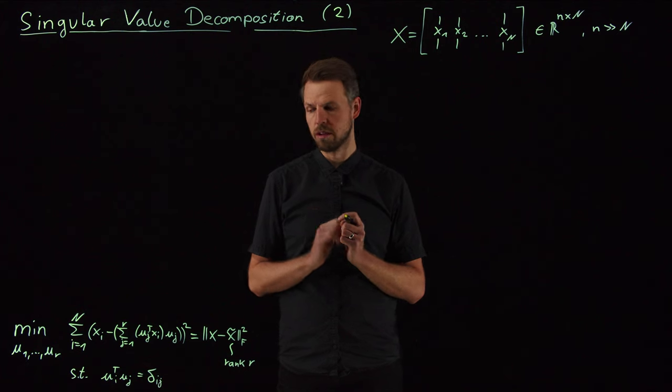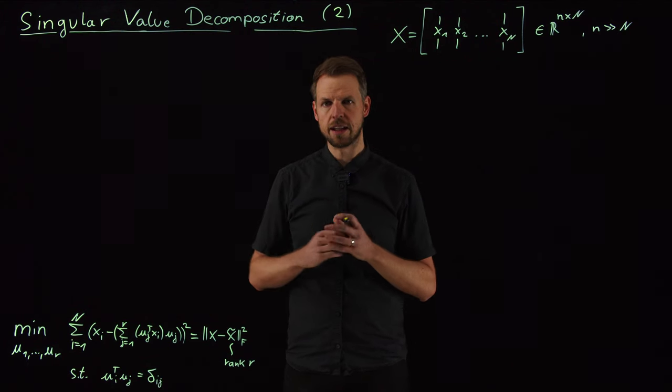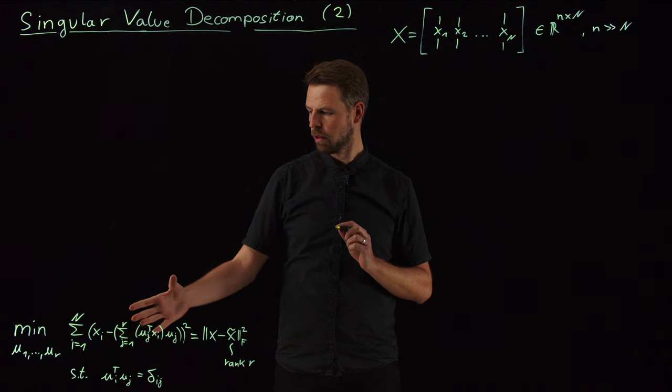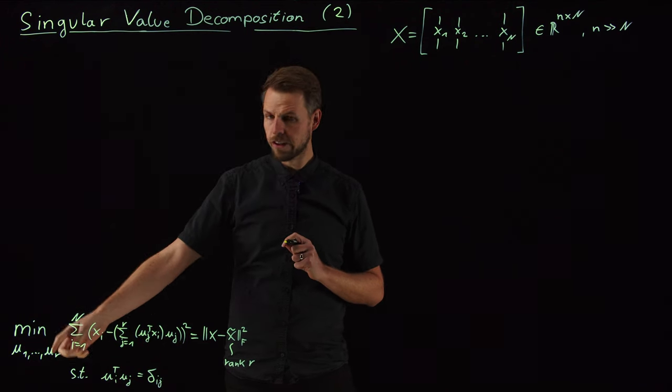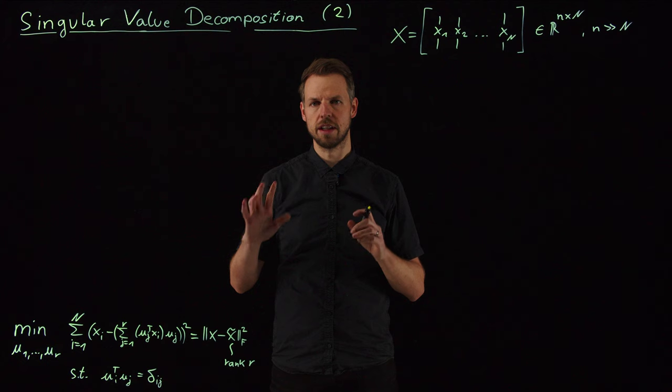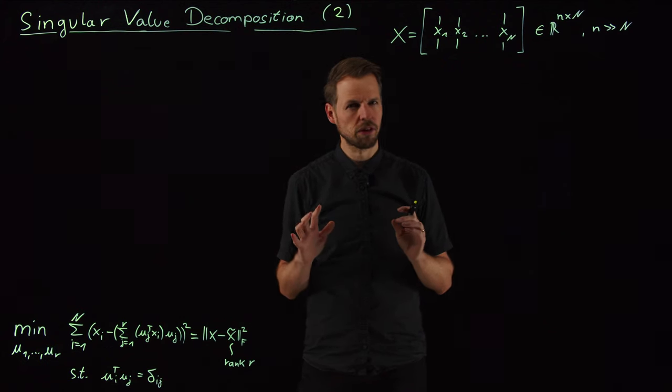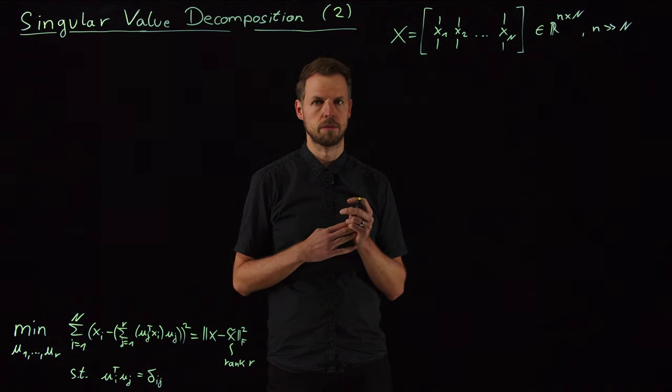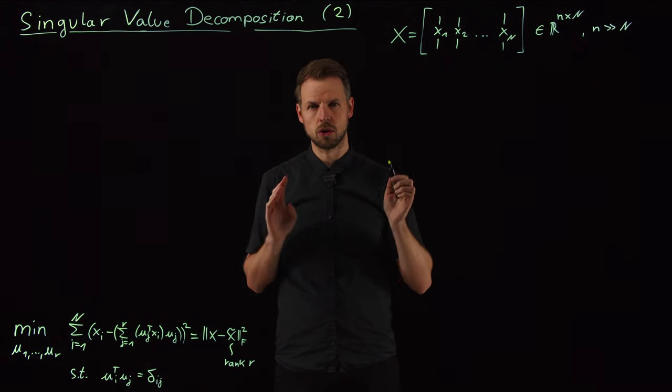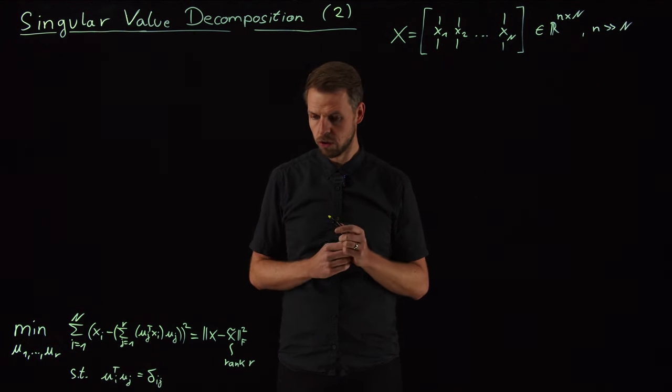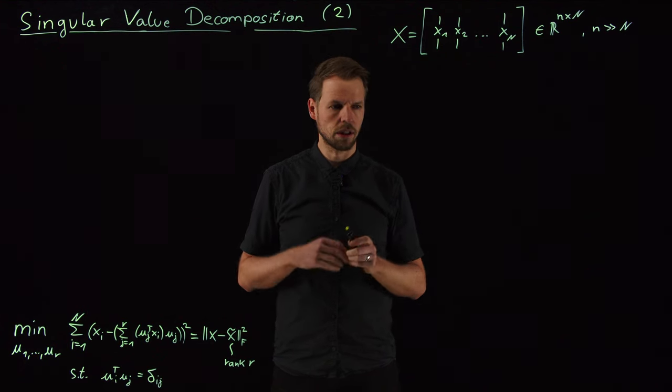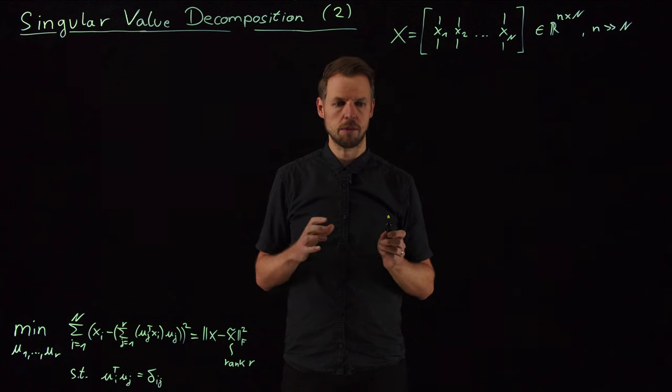And then we end in the last video with the statement that the famous Eckart-Young theorem tells us the solution of this problem is simply given by the leading R singular vectors of our data matrix. And so this video is about this singular value decomposition and how these matrices look. We're not going to talk about how to compute it. There's lots of videos on how to do this by others and there's a lot of literature in great books to see how this can be computed.